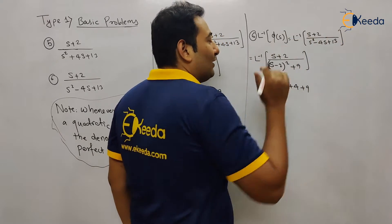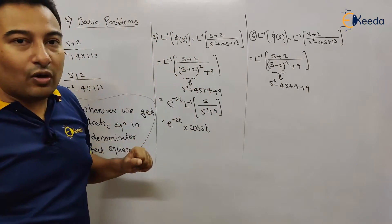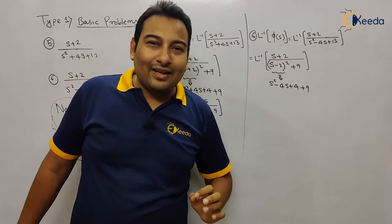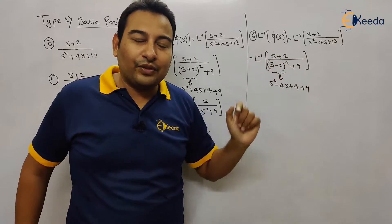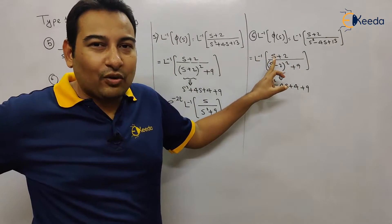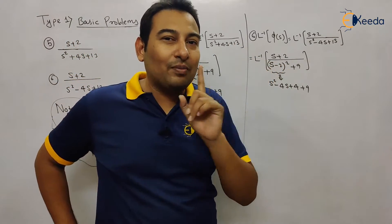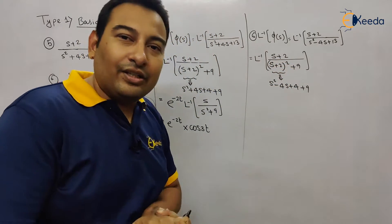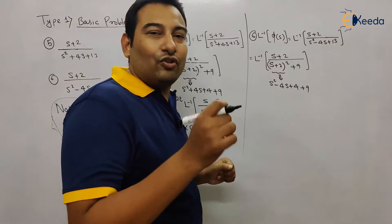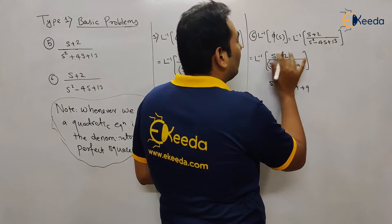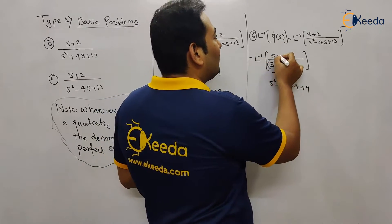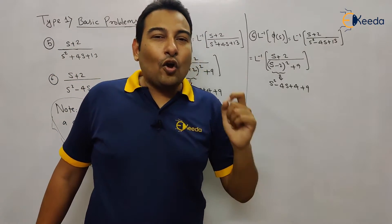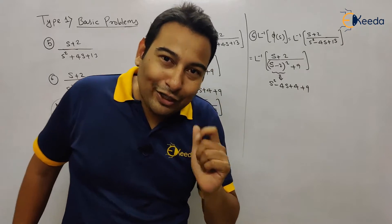So that gives us (s−2)² + 9. Now, do you still see shifting here? The answer is no — this will be similar to problem number 4. If both signs were plus, that is a shifting and you take e^(−2t) outside. If both are minus, that is also okay. But the problem here is one is minus and one is plus. So the note says: if this is the situation, always convert the numerator according to the denominator.